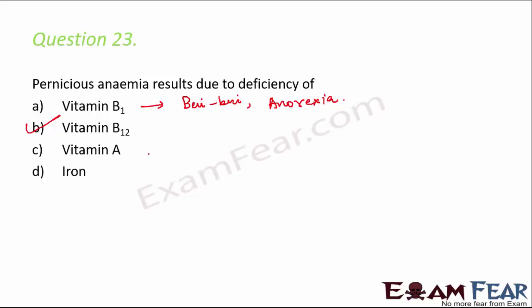Deficiency of vitamin A can cause night blindness, which is a very common disorder. It can also cause several skin diseases, known as dermatosis, so vitamin A is very important for good skin. Deficiency of iron can cause anemia.